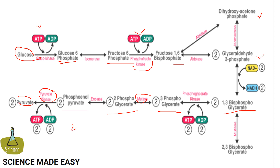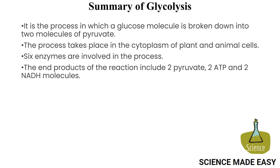The key points of glycolysis: it is a process in which a glucose molecule is broken down into two molecules of pyruvate. The process takes place in the cytoplasm of plant and animal cells. In total, 6 enzymes are involved, and the end products include two pyruvate molecules, two ATP molecules, and two NADH molecules.